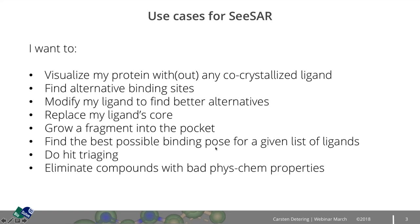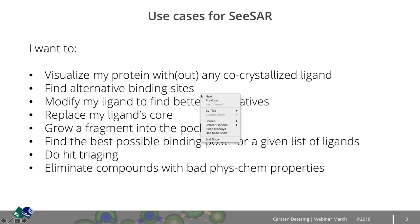The use cases for CESA that I want to talk about today include: visualizing the protein with or without any co-crystallized ligand. In many structurally enabled projects, you have a wealth of protein structures — some with, some without a ligand. You have the possibility to pick a binding site on the basis of a co-crystallized ligand. But if you have an apostructure, CESA supports you in finding an alternative binding site, or if you want to explore an allosteric site or simply explore the protein in a different way.